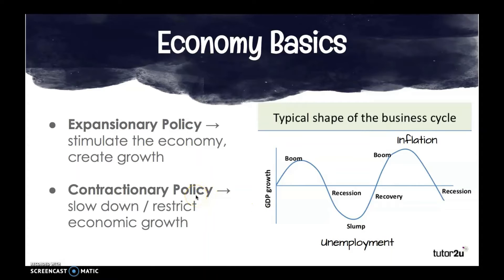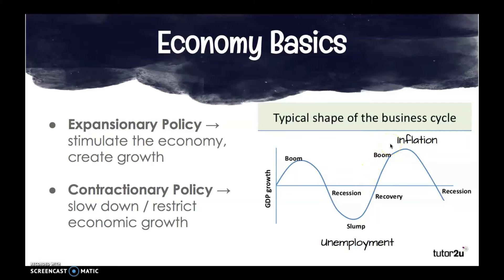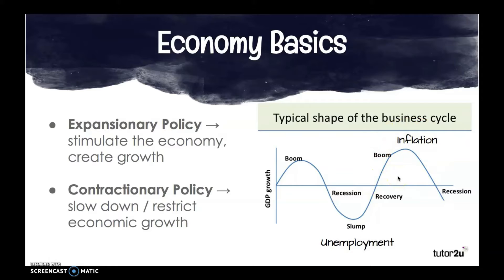There is also contractionary fiscal and monetary policy, used to slow down or restrict economic growth. This will be used during booms or periods of really rapid economic growth. I know that sounds funny — why would we want to slow down growth? But if something grows too quickly, the economy can collapse. Think of a kid just learning to run who gets going way too fast, gets tripped up, and falls down. That's what our economy can do if it grows too quickly, so we use contractionary policies to slow that down.